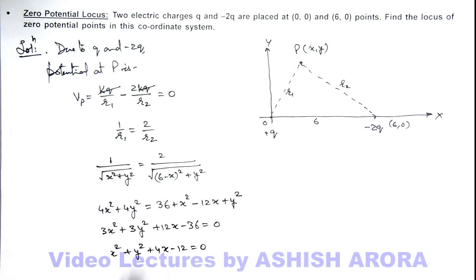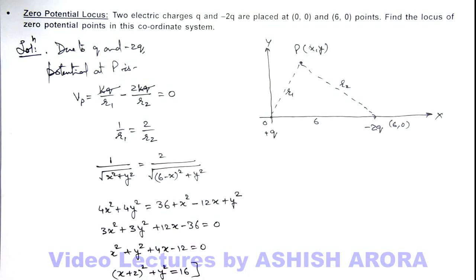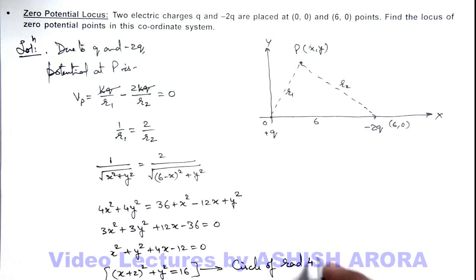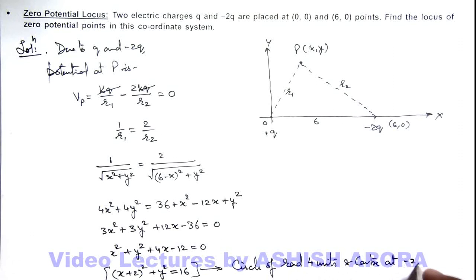We can further simplify x² plus 4x by completing the square. Adding and subtracting 4, this gives (x plus 2)² plus y² equals 16. So this is the locus, and we can write this is a circle of radius 4 units and center at (minus 2, 0). This is the answer to the problem.